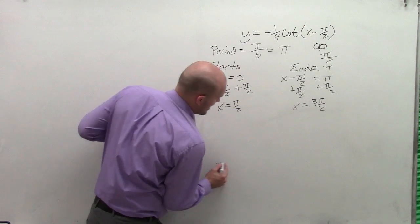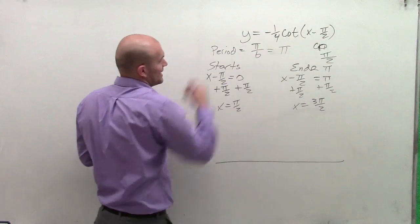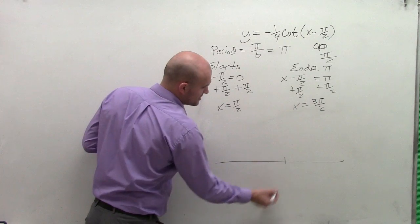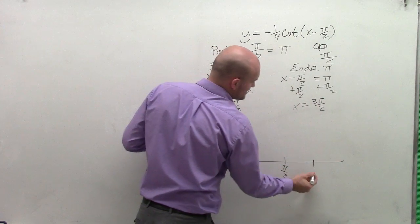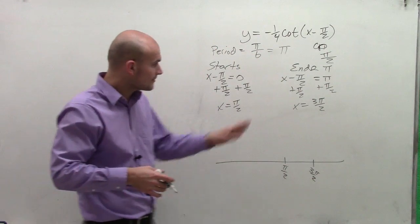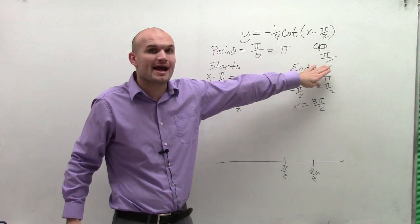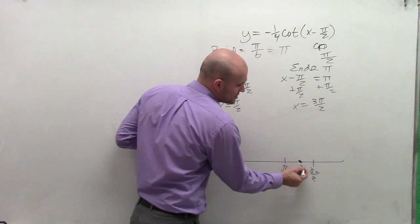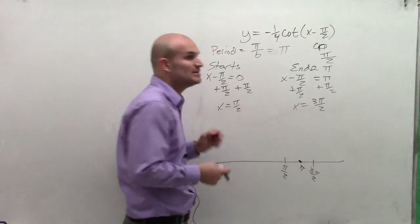So now let's go ahead and graph this, and we'll get into the negative and the 1/4 here in a second. So we're going to start at pi halves. I'm just going to say this point is pi halves. My graph ends at 3 pi halves. Since my critical points is pi halves between each other, I have a critical point between my two asymptotes, which is going to be at pi. And that's going to be my intercept.